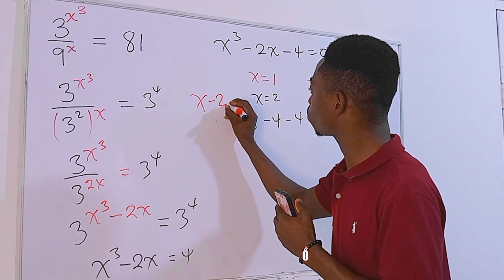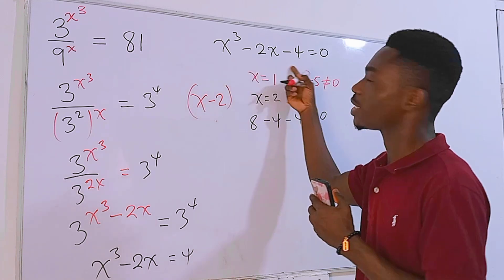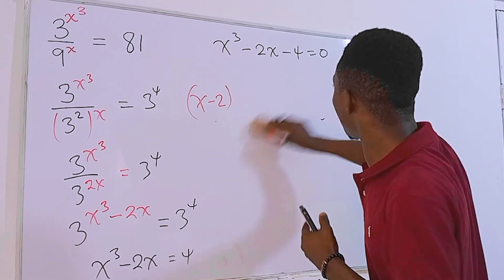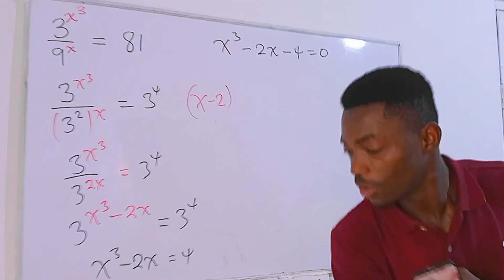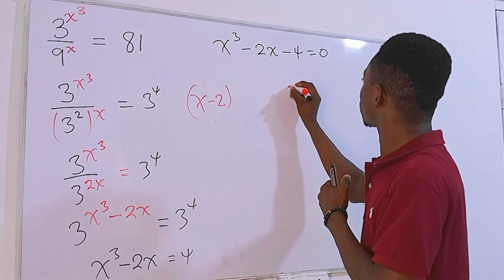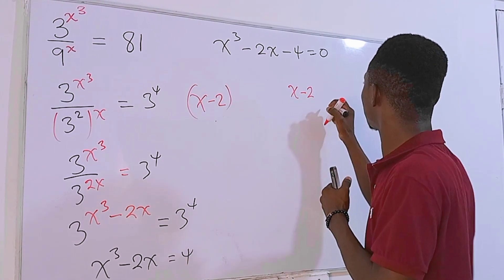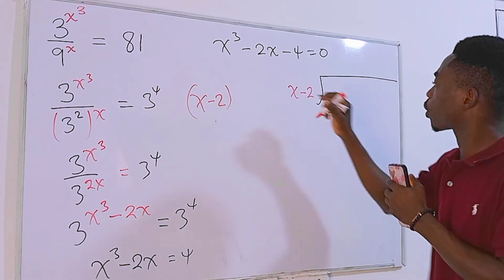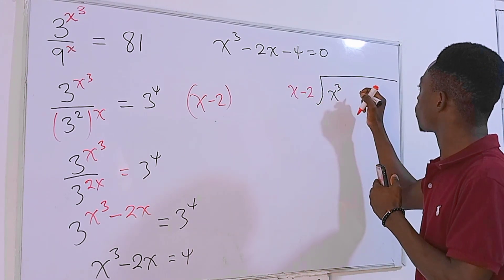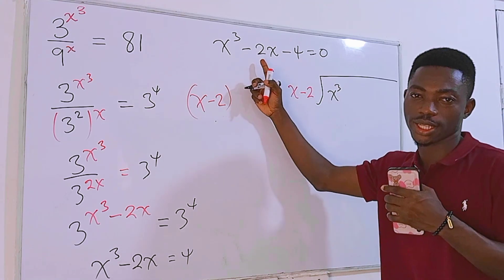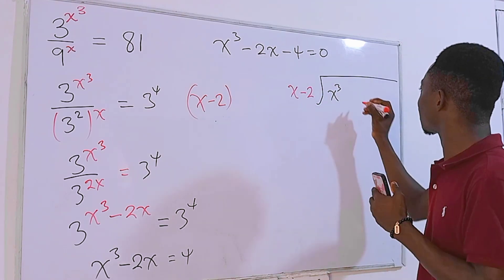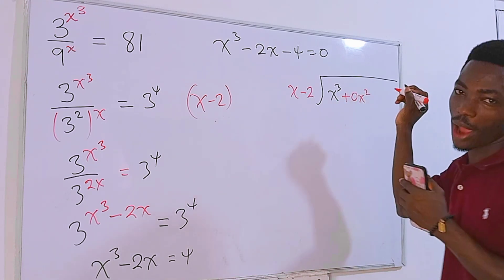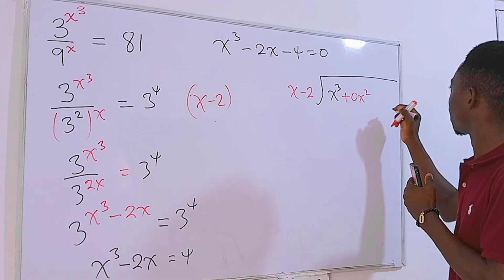Since x equals 2 satisfies the equation, (x minus 2) is a factor of this cubic equation. I'll divide the cubic by this factor. We set up: (x minus 2) dividing into x cubed plus 0x squared minus 2x minus 4.